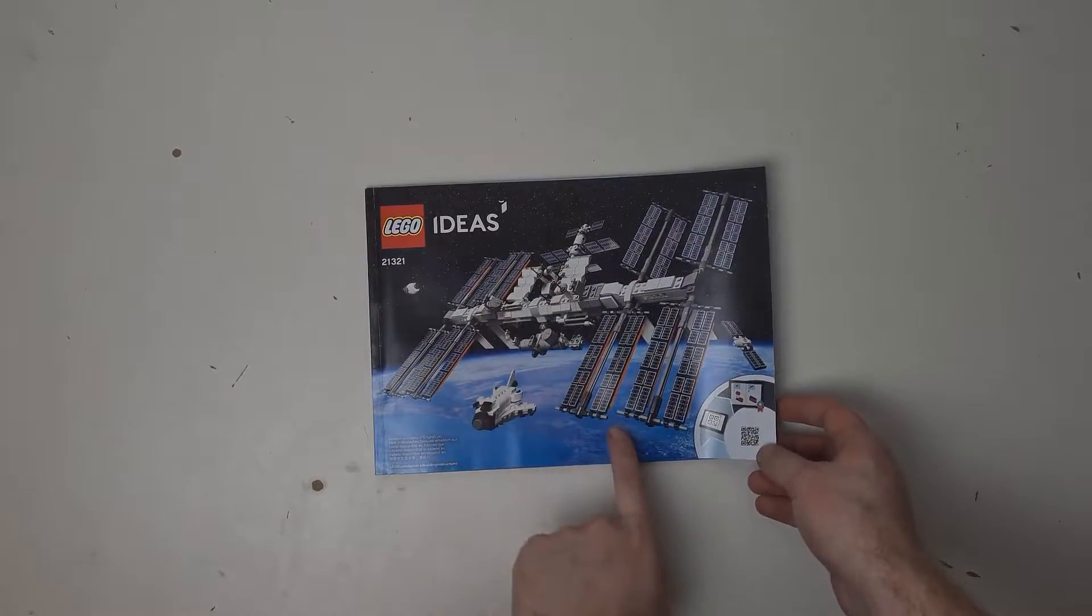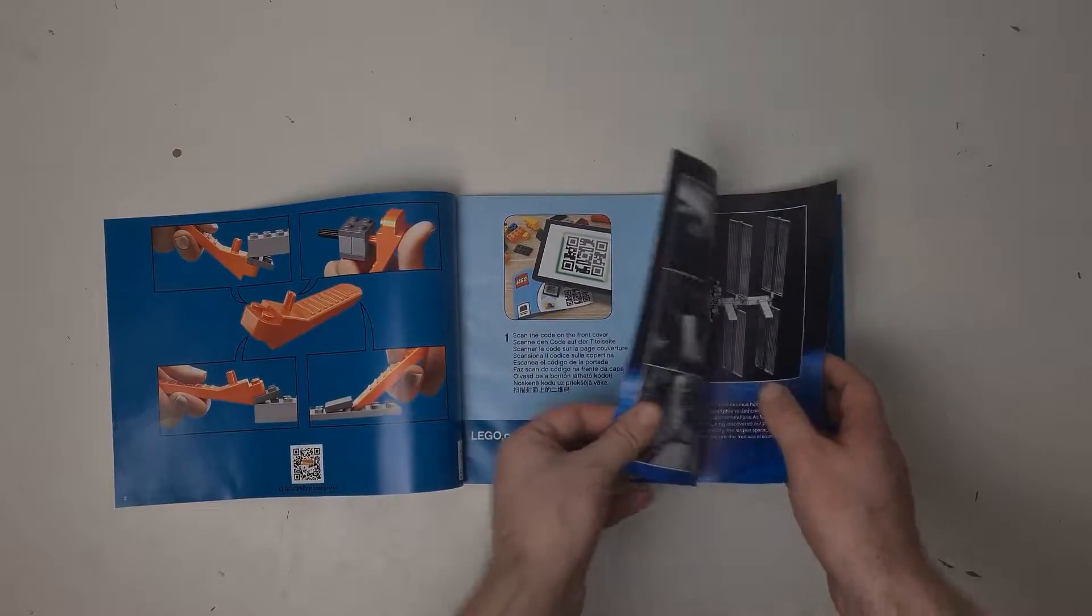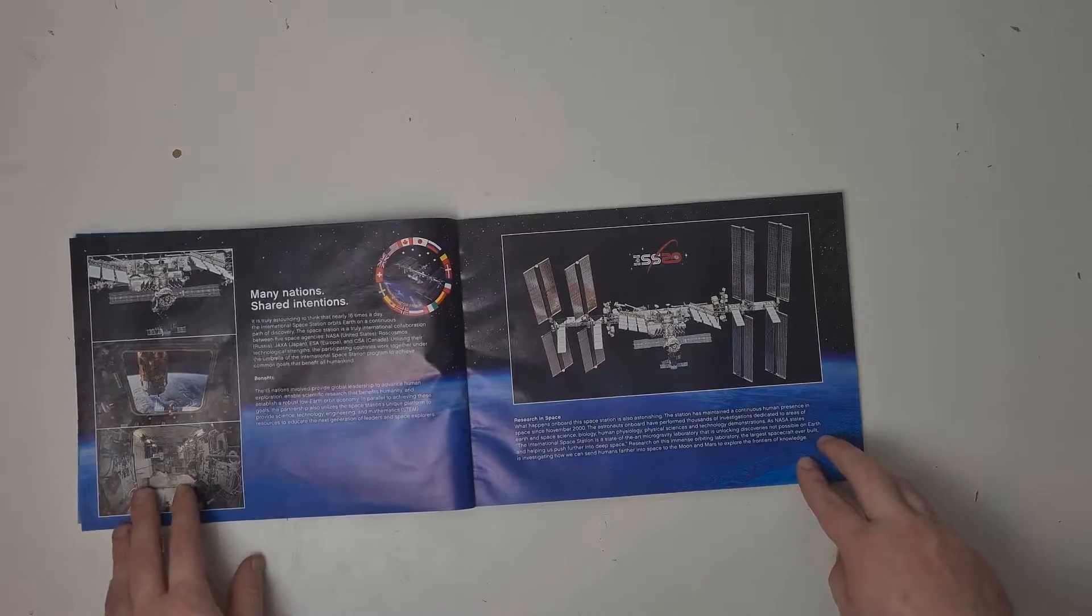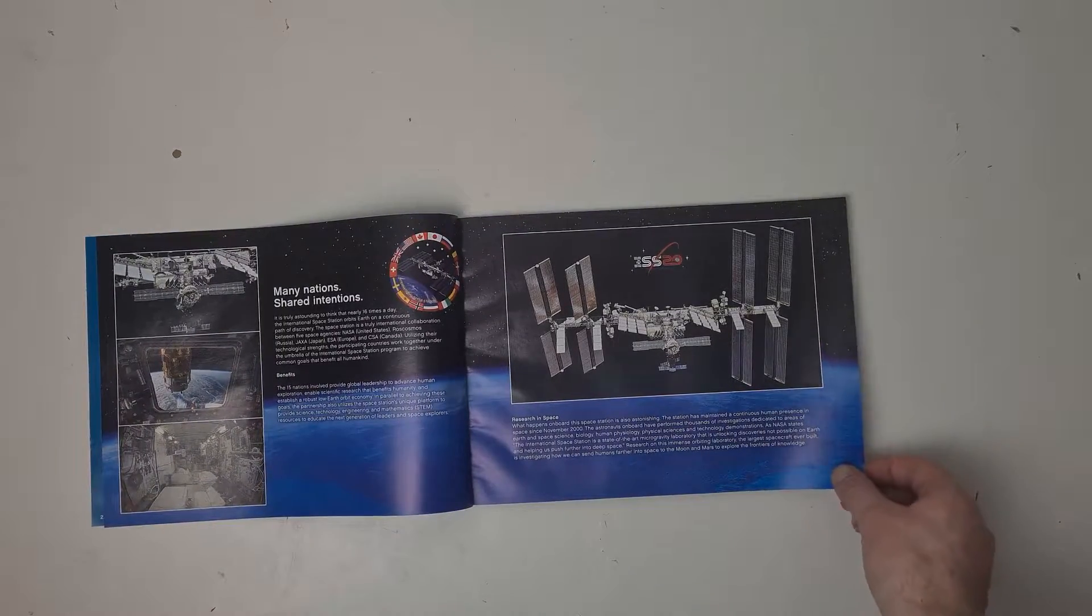So then onto the manual, it's got the same photo as the front of the box. And then there's some words about the International Space Station, so if you want to give it a pause I'll just flick through.